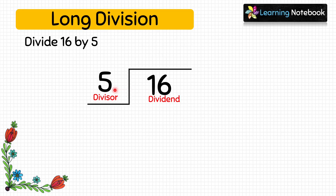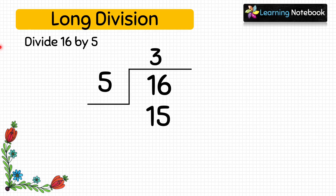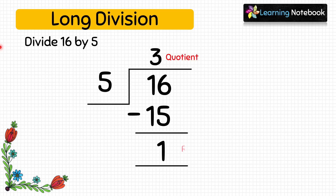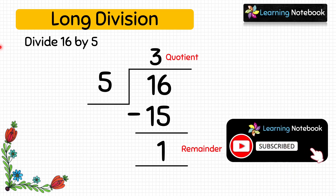16 is a bigger number than 5, so we can now start the long division. 5 into 3 equals 15, and 16 minus 15 equals 1. We cannot divide further, therefore the quotient is 3 and the remainder is 1. This is how we do division using the long division method.